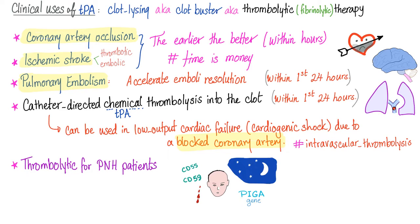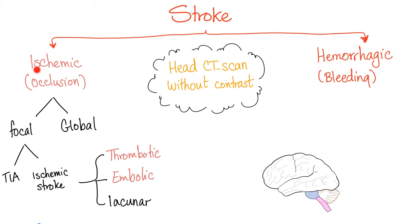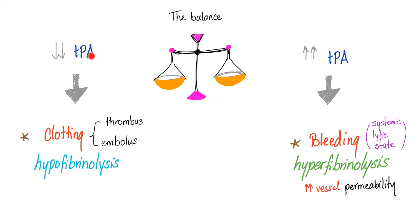We can use TPA to open a blocked coronary artery causing cardiogenic shock, and in paroxysmal nocturnal hemoglobinuria patients who are more prone to thrombosis. Ischemic stroke is divided into focal and global; focal includes TIA and ischemic stroke, which can be thrombotic, embolic, or lacunar. The most common use of TPA or streptokinase is ischemic strokes. Too little TPA and you will clot; too much TPA and you will bleed — this is called the systemic lytic state.